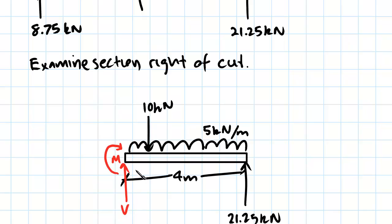So if you're cutting from, if you're looking at the right side, you draw them in this orientation: clockwise and upwards. And if you're looking at the left section, you draw shear downwards and the moment as being anti-clockwise.